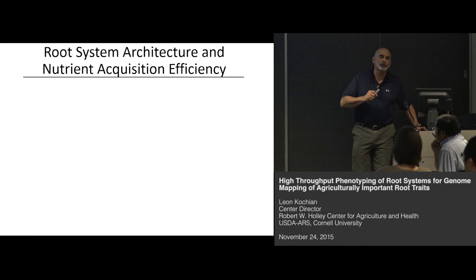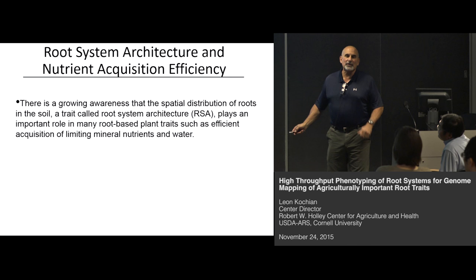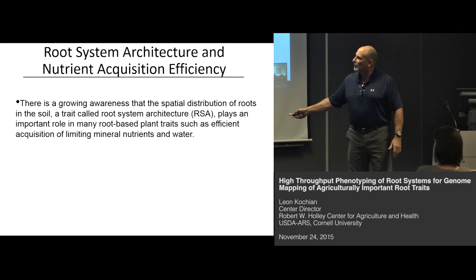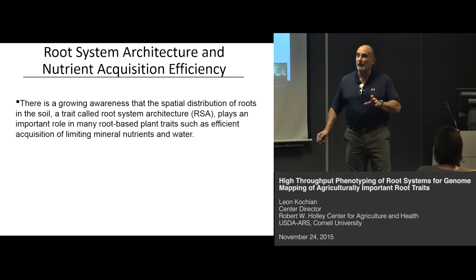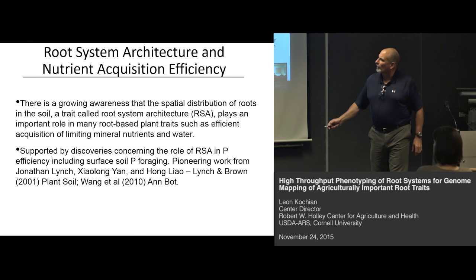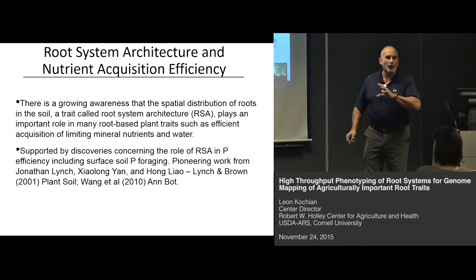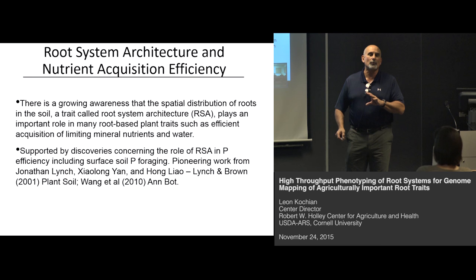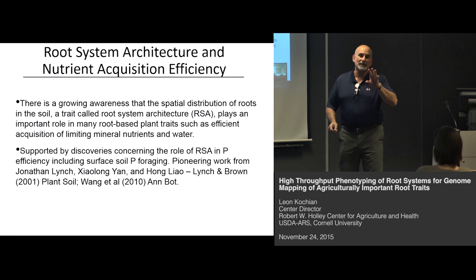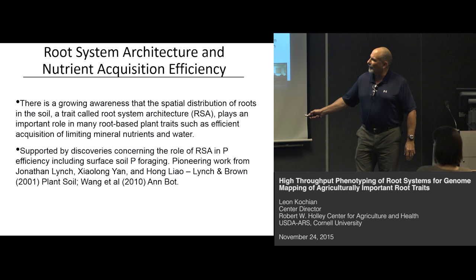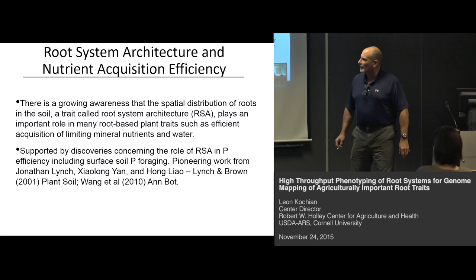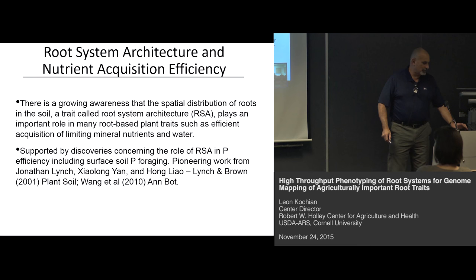Now I'll move on to looking at roots in three dimensions — root system architecture. There's a growing awareness that the spatial distribution of a root system in three dimensions in the soil, which we call root system architecture, plays an important role in many agronomic traits, particularly the acquisition of mineral nutrients and water under limiting conditions. A lot of this was based on pioneering work on the role of root system architecture in phosphorus topsoil foraging and phosphorus efficiency. A phosphorus-efficient genotype has a genetically based ability to maintain yield in a low-P soil.